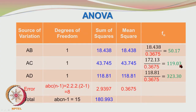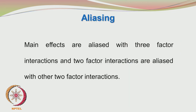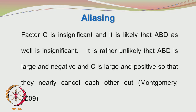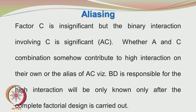The high F value is 119.03. AC is aliased with BD, so it may be the BD interaction which is actually showing up with sufficient sum of squares for the F value to be quite high. To repeat: factor C is insignificant, but the binary interaction involving C is significant. Whether the AC combination contributes on its own or the alias BD is responsible for the high interaction will only be known after the complete factorial design is carried out.